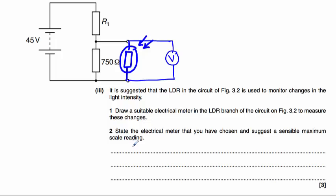Part two asks us to say what it is. It is a voltmeter. And also to state a sensible maximum scale reading. Well, the battery here is at 45 volts. Therefore, we need a voltmeter that goes up to 45 volts.